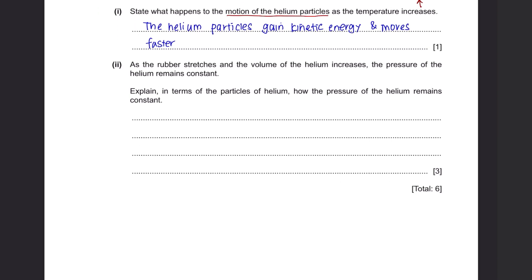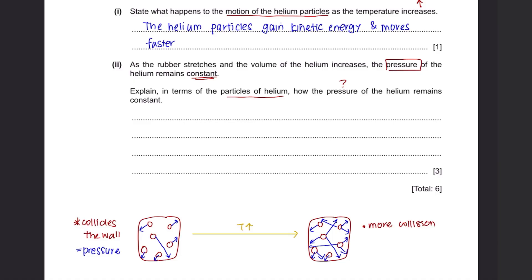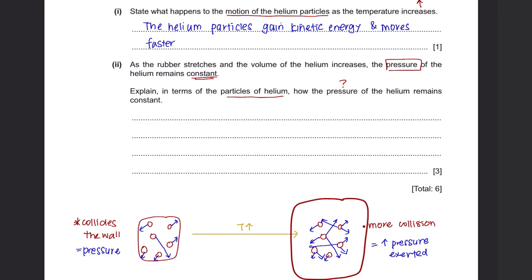Part 2: As the rubber stretches and the volume of the helium increases, the pressure of the helium remains constant. Explain, in terms of particles of helium, how the pressure remains constant. The particles of helium are constantly colliding with the walls of the container, and these collisions create pressure. When temperature increases, particles gain kinetic energy and move faster, leading to more frequent and energetic collisions. However, since the balloon stretches simultaneously, more space is created for the particles to move around. So even though collisions are more frequent, they occur in a larger space, and hence the pressure remains constant.